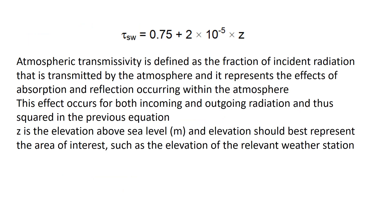Atmospheric transmissivity is computed using its own formula. It is defined as the fraction of incident radiation transmitted by the atmosphere, representing the effects of absorption and reflection within the atmosphere. This effect occurs for both incoming and outgoing radiation, which is why it is squared in the surface albedo equation. The elevation above sea level used should best represent the area of interest, such as the elevation of the relevant weather station.